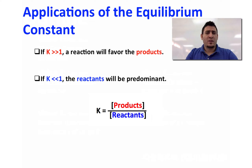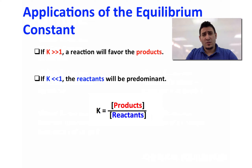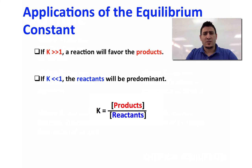If the equilibrium constant is way less than 1, this means that the reaction favors the reactants. So the denominator in the expression of K is greater than the numerator, which means that the concentration of reactants is way greater than the concentration of products.